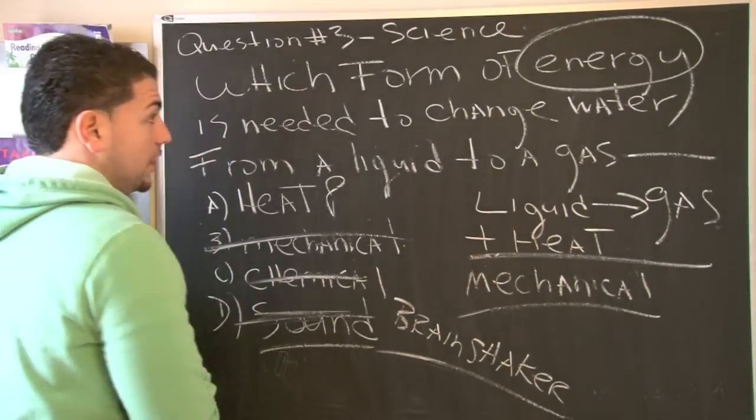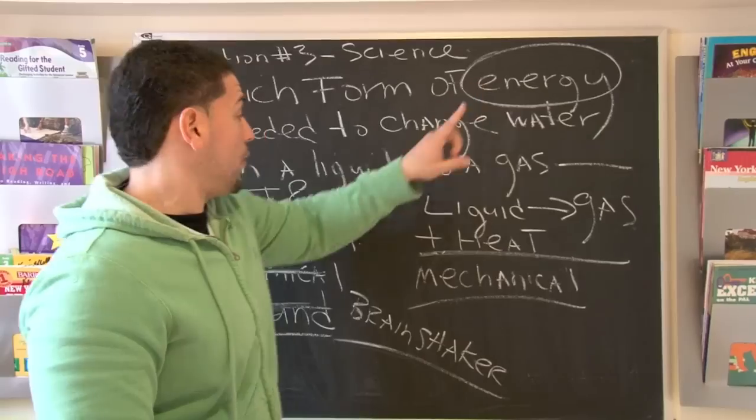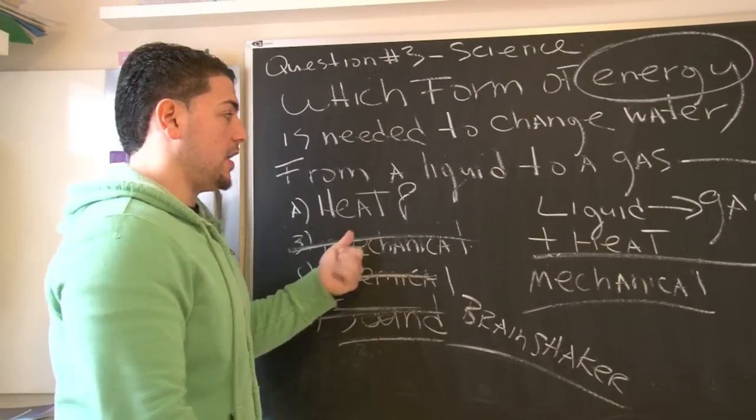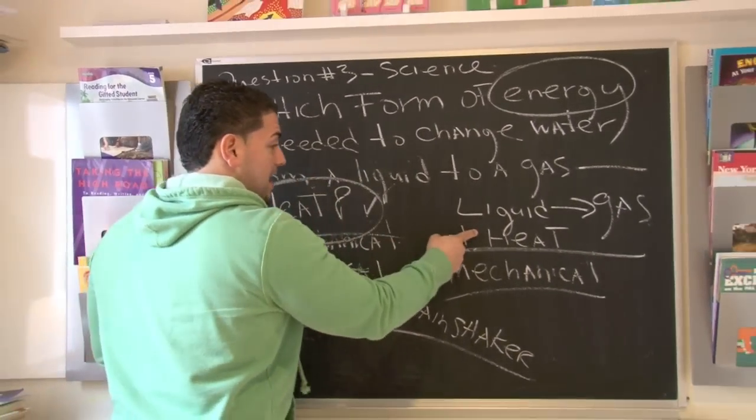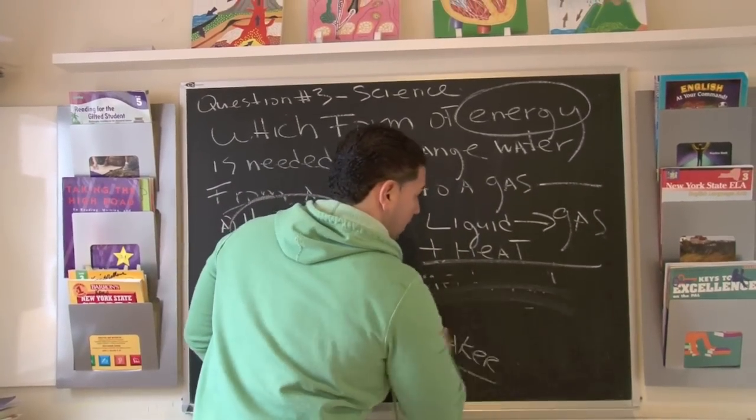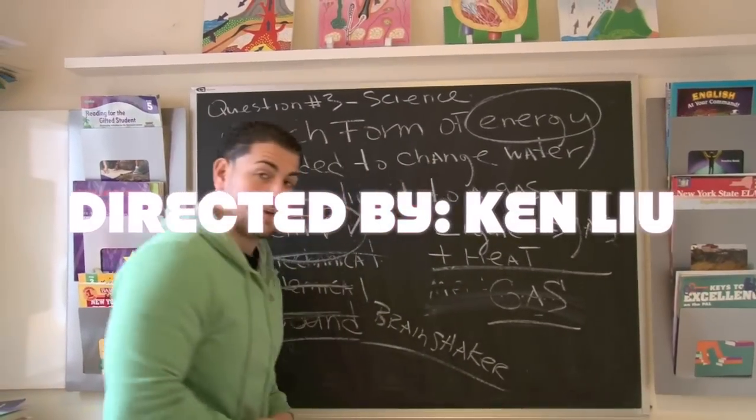So it can't be the right answer. Going back to the context clues, we're looking at a form of energy. We know that heat is a form of energy. So we know that heat has to be the right answer. Because if we add heat, it's definitely going to change this into a gas.